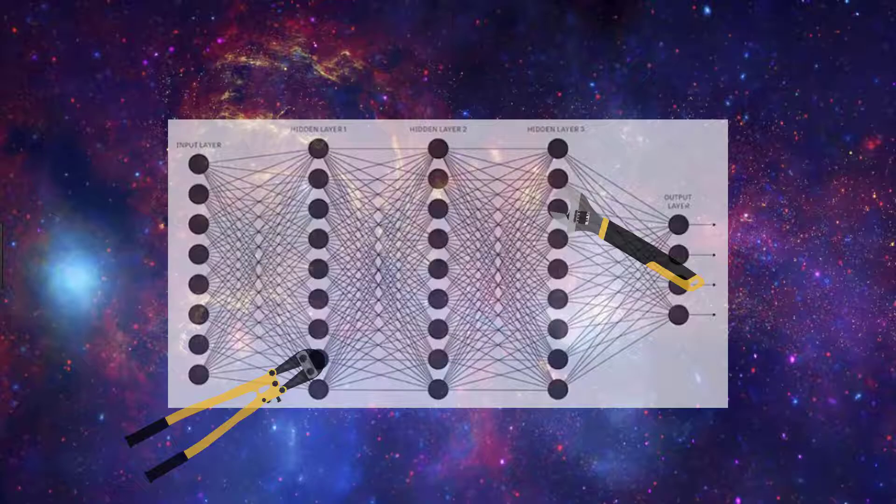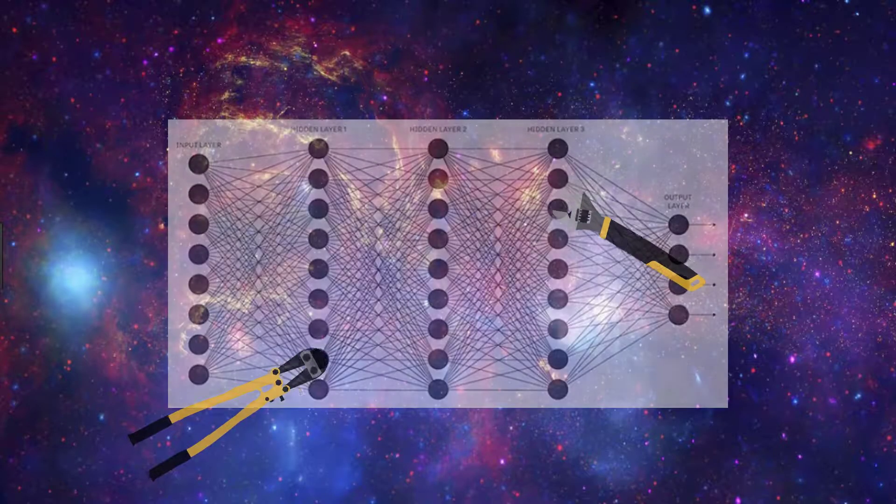Assuming the original task is similar to the new task, using an artificial neural network that's already been designed and trained allows us to take advantage of what the model has already learned without having to develop it from scratch.